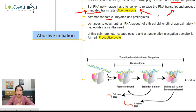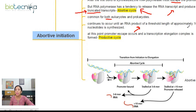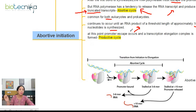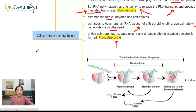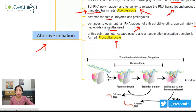When that threshold length of 10 to 12 ribonucleotides is achieved, the RNA polymerase will randomly escape the promoter and continue with the regular transcription events. At that point, we say the abortive cycle has been converted to productive cycle. This phenomenon — where RNA polymerase is trying to escape the promoter — is known as promoter escape.